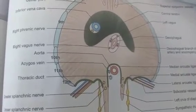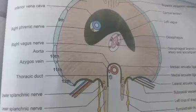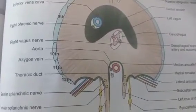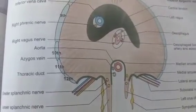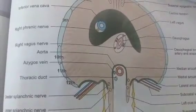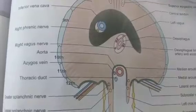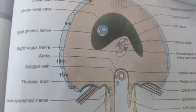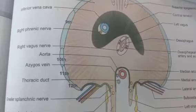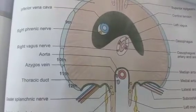Hiccups are the result of spasmodic contraction of the diaphragm. Hiccups are of two types: central and peripheral. The peripheral hiccups are due to local irritation of the diaphragm or its nerve, whereas central hiccups are due to irritation of the hiccup center in the medulla.